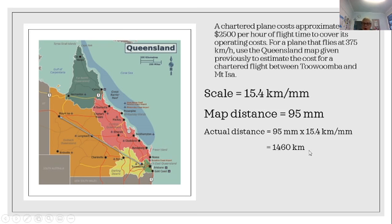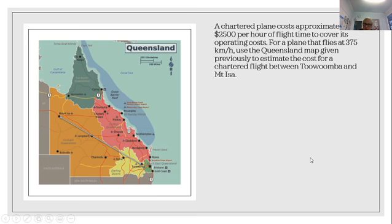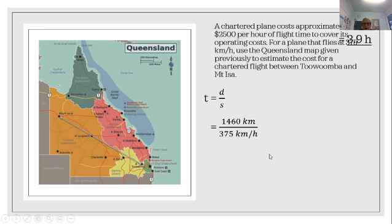Now we have to find out how long we're going to be in the air. Time equals distance divided by speed. So: 1460 kilometers divided by 370 kilometers per hour, which tells us we will be in the air for 3.9 hours.